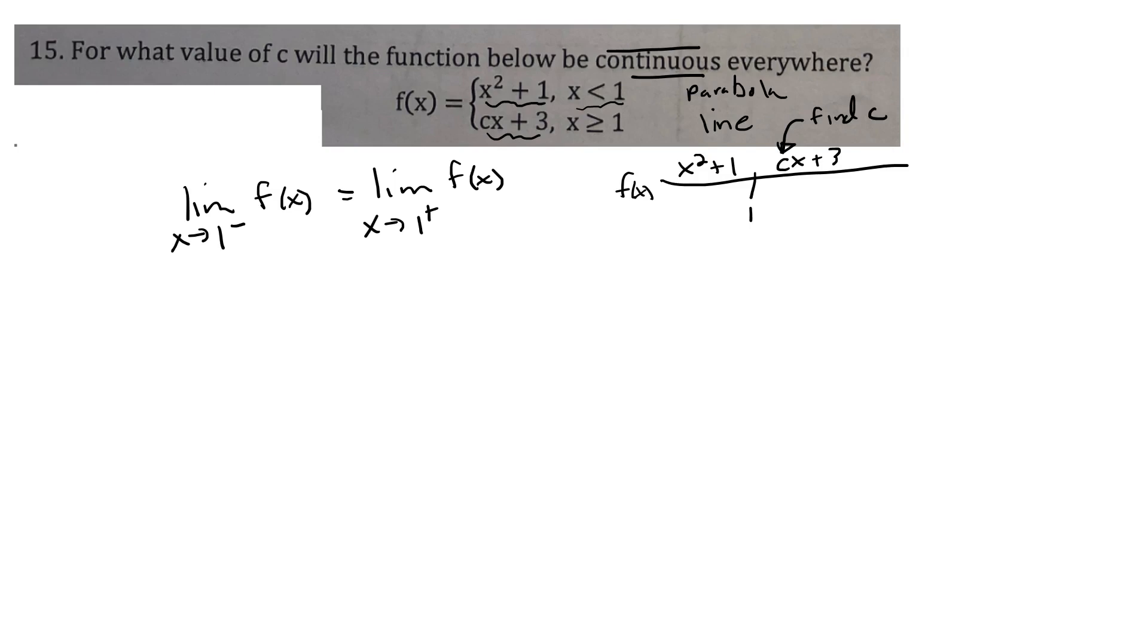And so for the left-hand side, we'd be using the parabola. For the right-hand side, we'll be using the line. And so I've got to put x squared plus 1 in here and take the limit as x goes to 1 from the left. And then that'll give you just, you plug a 1 in. Nothing will stop you. So that'll be 1 squared plus 1. The parabola is heading towards 2. The limit as x goes towards 1 from the right, you would use this cx plus 3 and plug a 1 into that for x. And you get c plus 3.